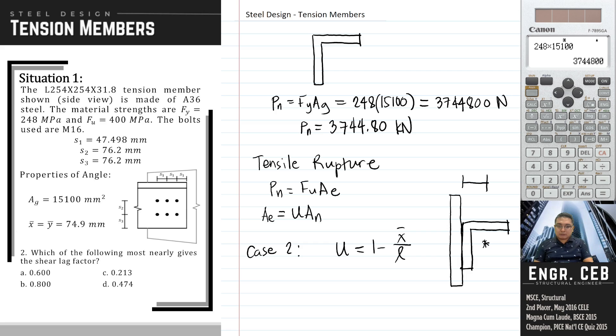This is the x bar. It stands from the centroid of the member to the plane of connection. For this particular problem, x bar is given, and its value is 74.9. How about L? How do we determine L? In determining L, that is the length, or the distance between the extreme bolts in the line. From one end of the bolt to the farthest end, or to the bolt at the farthest end. In this case, this is our L.